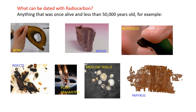So what can be dated with radiocarbon? Well, just about anything that was once alive and less than 50,000 years old. For example: bone, wood, shells, nutshells, insects, plant fragments, papyrus, and many other things.